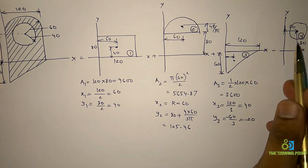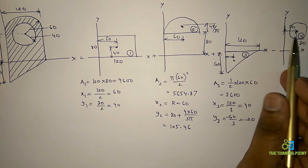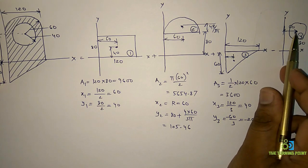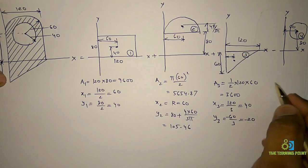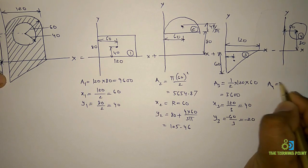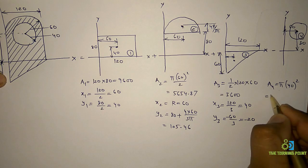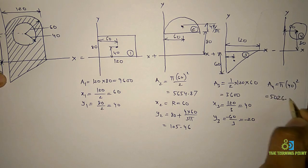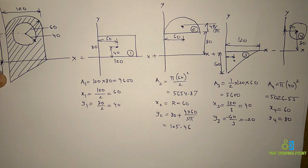For the circle, the centroidal coordinates are 60 and 80 because the distances from the center to the x-y axes are directly given. Area A4 is π times 40 squared, which equals 5026.55. x4 equals 60 and y4 equals 80, both given directly in the figure.